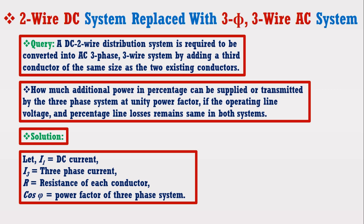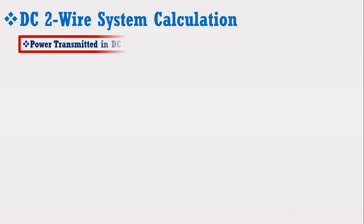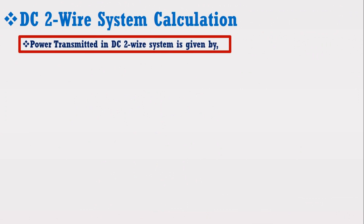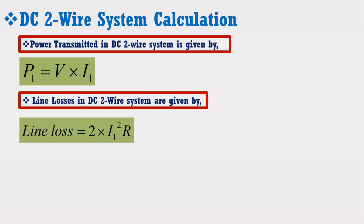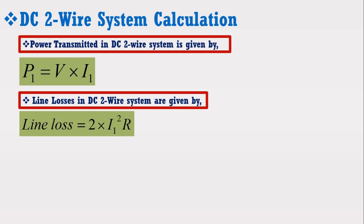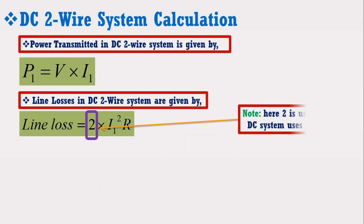First, we are going to derive the expression for percentage line loss of the DC 2-wire system. We know that power transmitted in a DC 2-wire system is given by P1 = V × I1, and the line loss in DC 2-wire system is given by 2 × I1² × R. It may be noted that 2 is used here because the DC system uses 2 wires. The percentage line loss is given by the following expression.